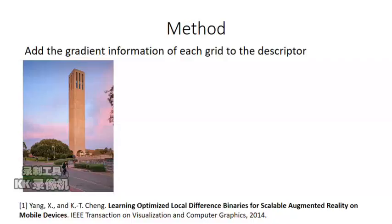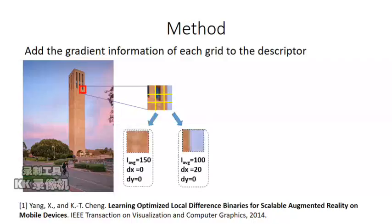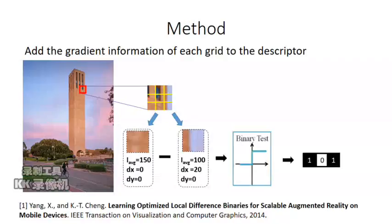First, we extract an image patch from a keypoint. We divide this patch into multiple grids. For each grid, we generate a child including the averaged intensity, horizontal gradient, and vertical gradient. Here we calculate the difference of child between two grids. Then pass them to the binary test to output a 3-bit sequence.